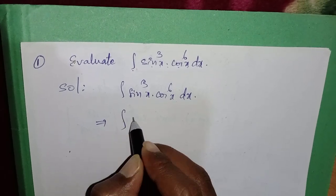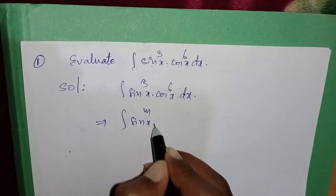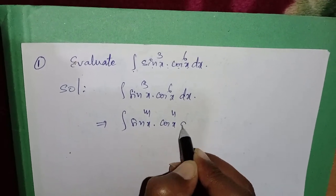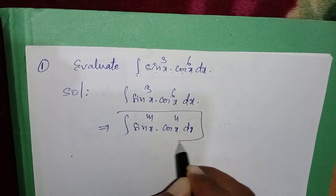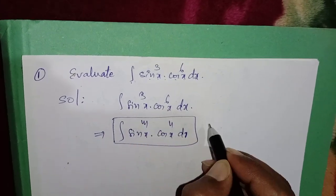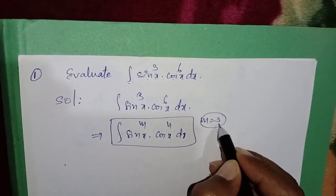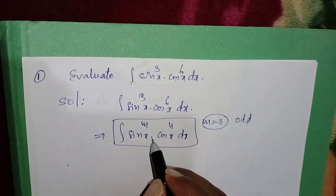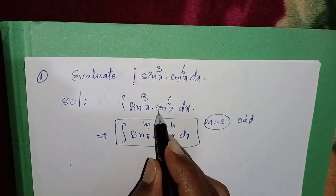We can write this in the form sin^m(x) · cos^n(x) dx. Comparing, the sin power value is m, and here the sin power value is 3, so m = 3. Note that 3 is an odd number.